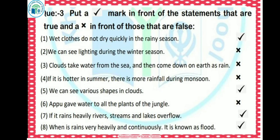Third: clouds take water from the sea and then come down on earth as rain — this is false, because water from rivers, wells, and seas all evaporate into water vapour, form clouds, and then fall as rain. Fourth: if it is hotter in summer, there is more rainfall during the monsoon — this is false.